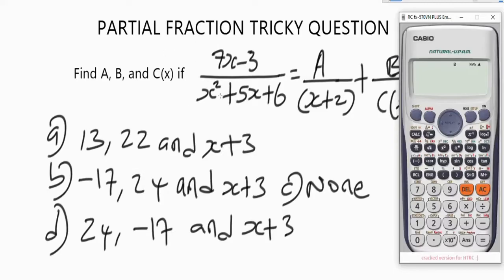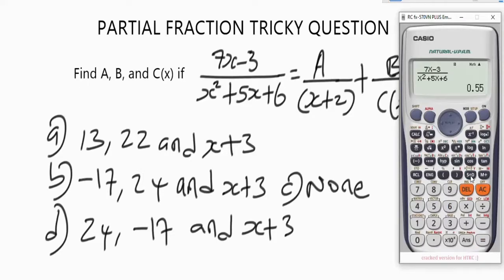Let's begin simplifying the question. Remember, I stored X as 2 to use it to simplify this question. We have 7X minus 3 over X squared plus 5X plus 6, and pressing equals gives us 11 over 20, or 0.55.